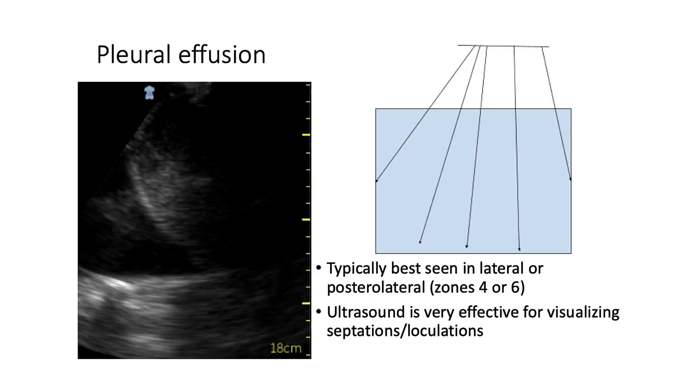Pleural effusions can be seen, typically anechoic, sometimes with septations or loculations. They are usually best seen in the lateral or posterolateral lung zones.